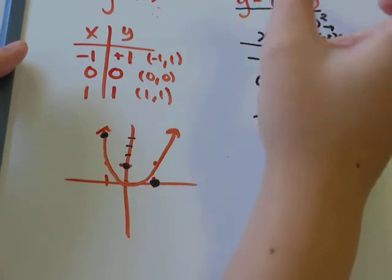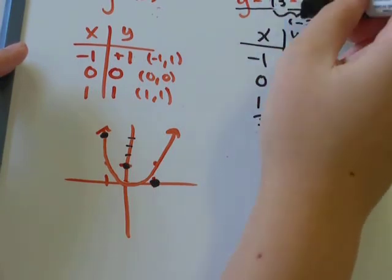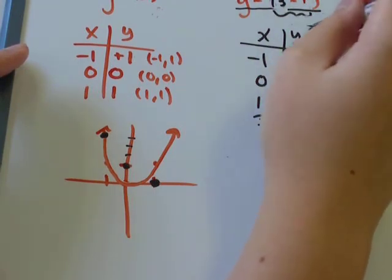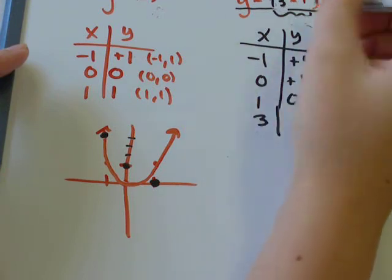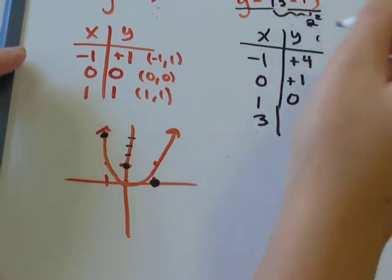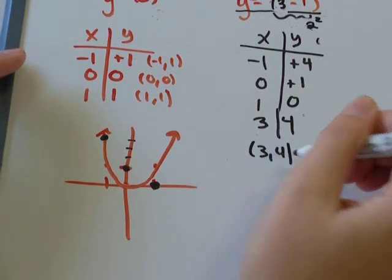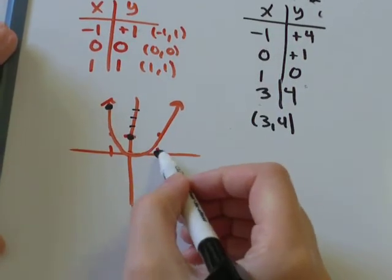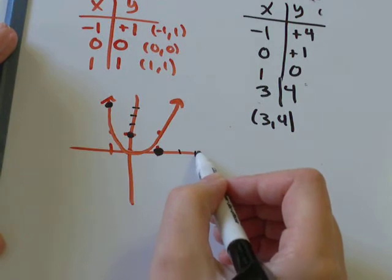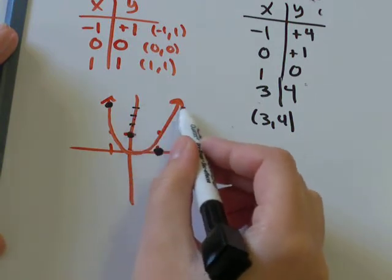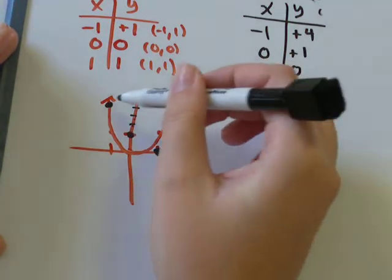Let's let x equal 3. So if x equals 3, 3 minus 1 would just be 2. And 2 squared would be 4. So we've got another point at 3, 4. So if we go over here, 1, 2, 3 in the x direction. 1, 2, 3, 4 in the y direction. We would be over here.